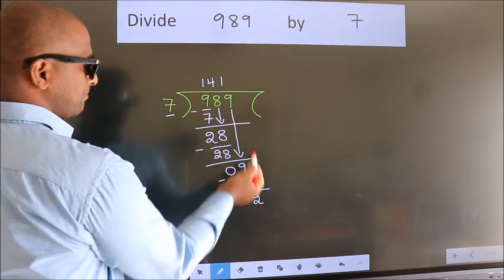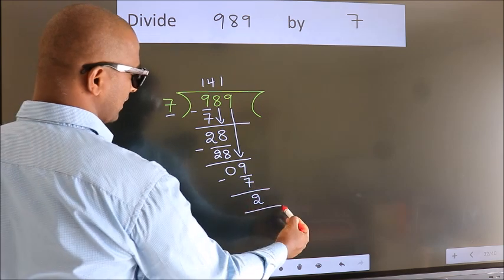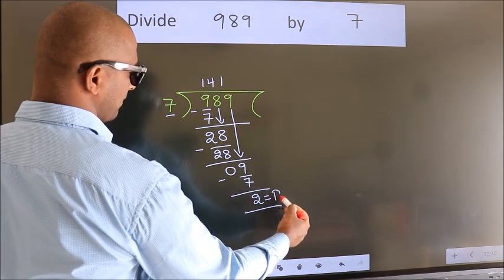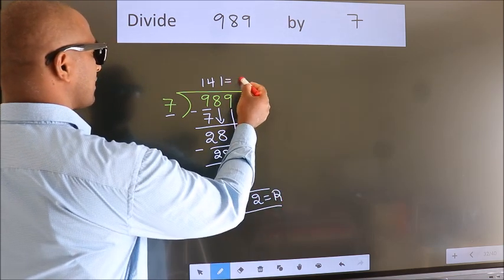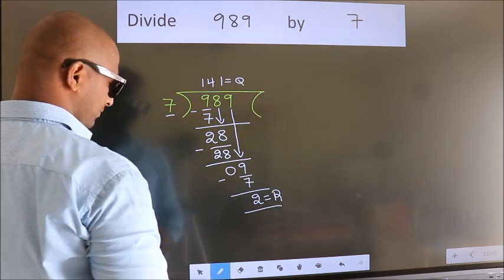No more numbers to bring it down. So, we stop here. This is our remainder. This is our quotient.